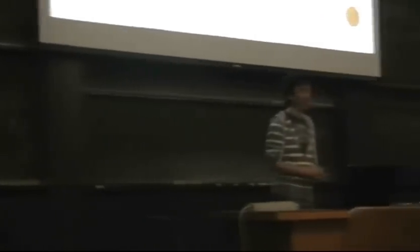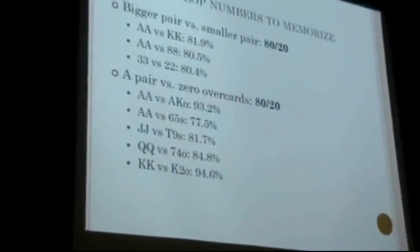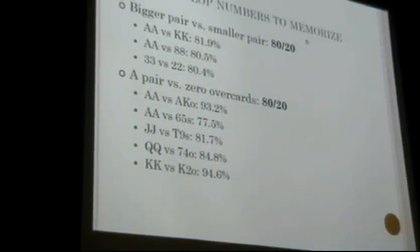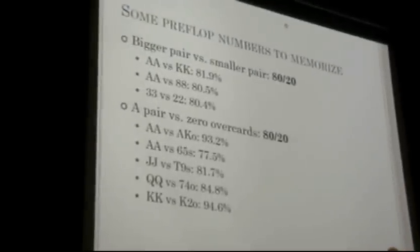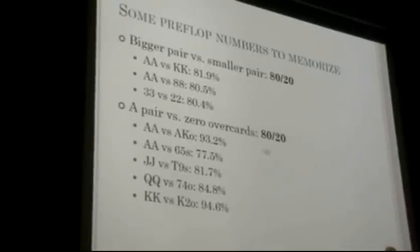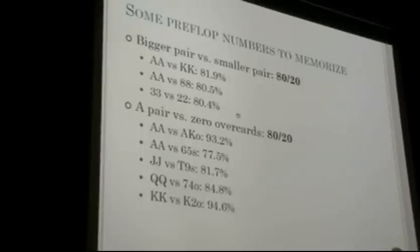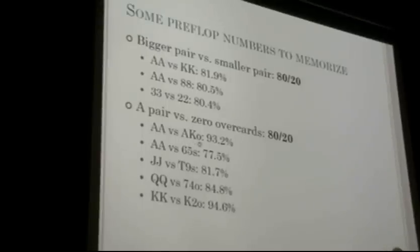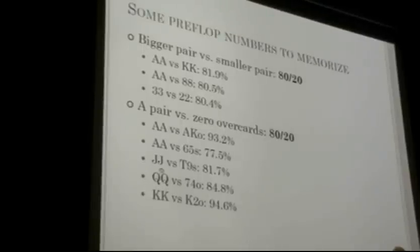Let's move on. It's good to memorize some hand equity percentages. Bigger pair against smaller pair is usually around 80%. A pair against two unpaired smaller cards is also usually 80% — though it can vary, like pocket aces against ace-king offsuit is as good as 93%. Queens against 7-4 offsuit: 84.8%. Jacks against 10-9 suited: 81.7%.